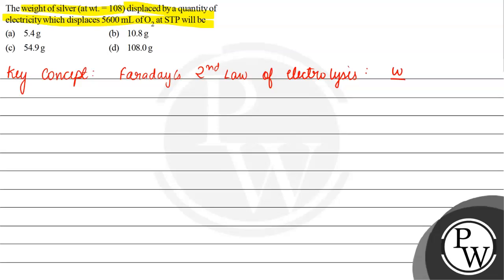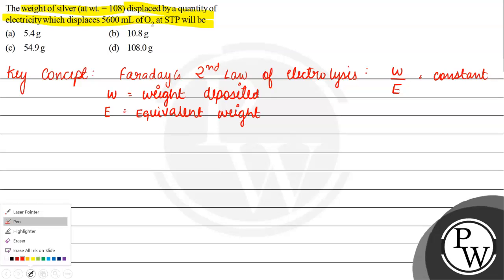So what happens here? W upon E is equals to constant. W upon E is constant, where W is the weight deposited and E is the equivalent weight. So let's see.